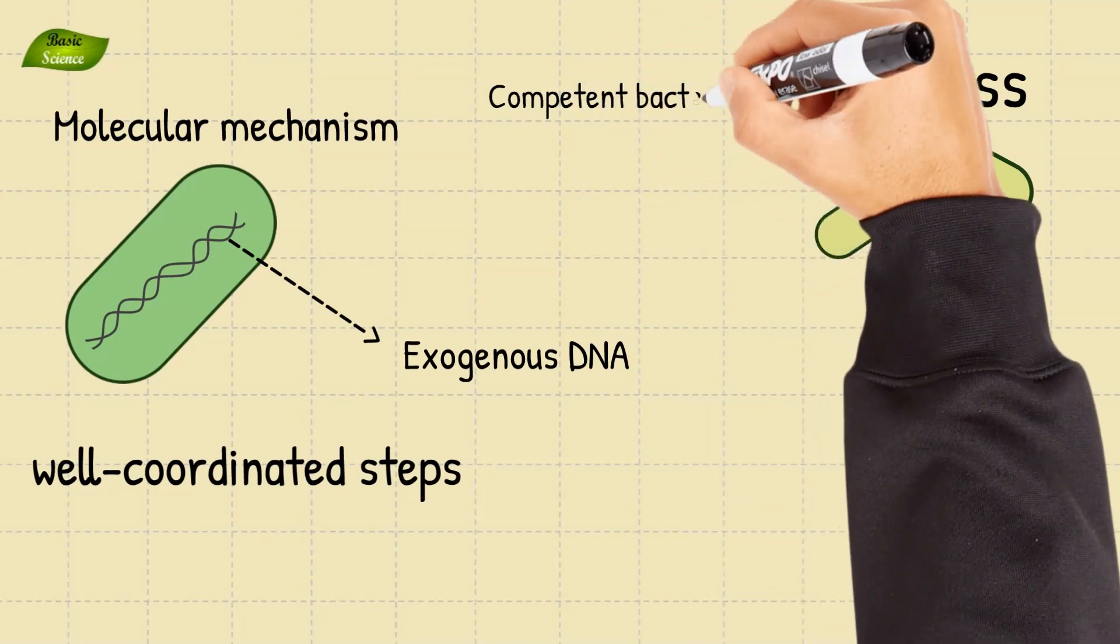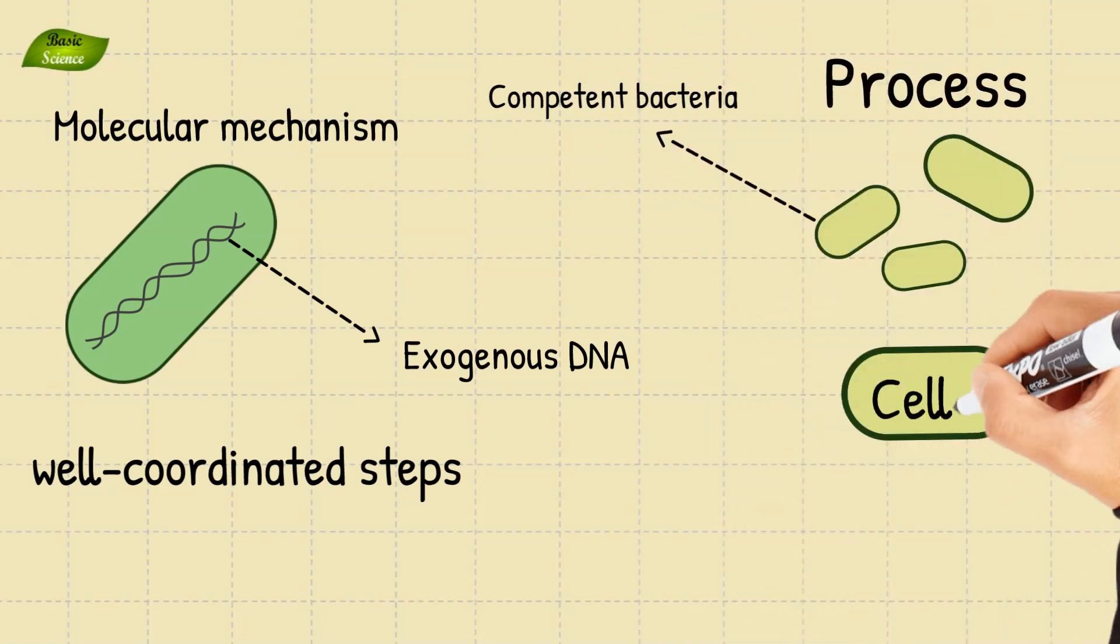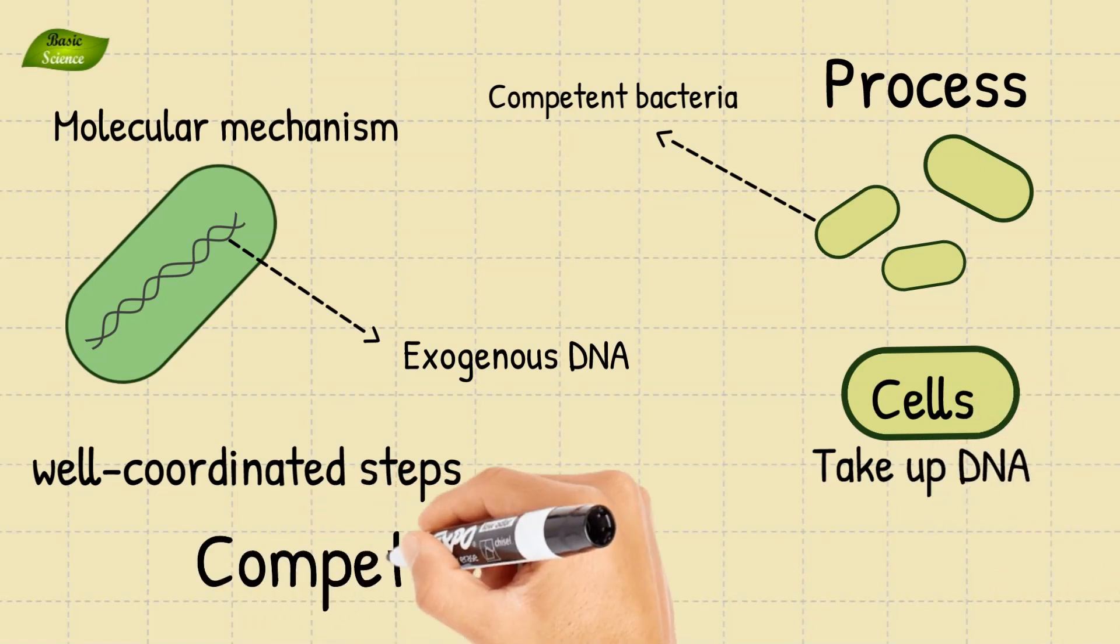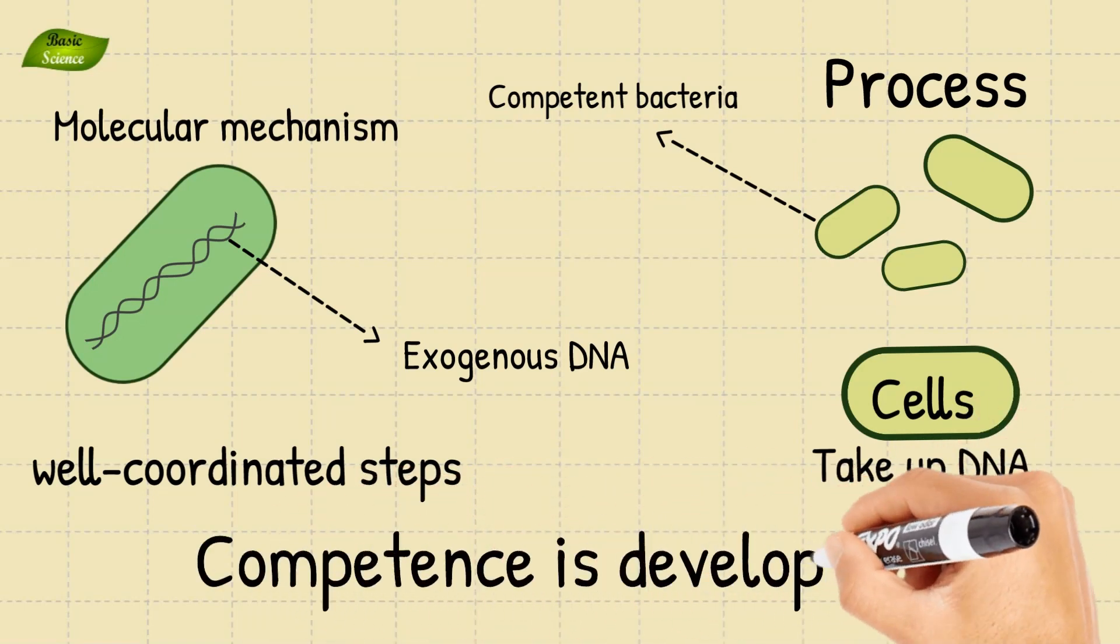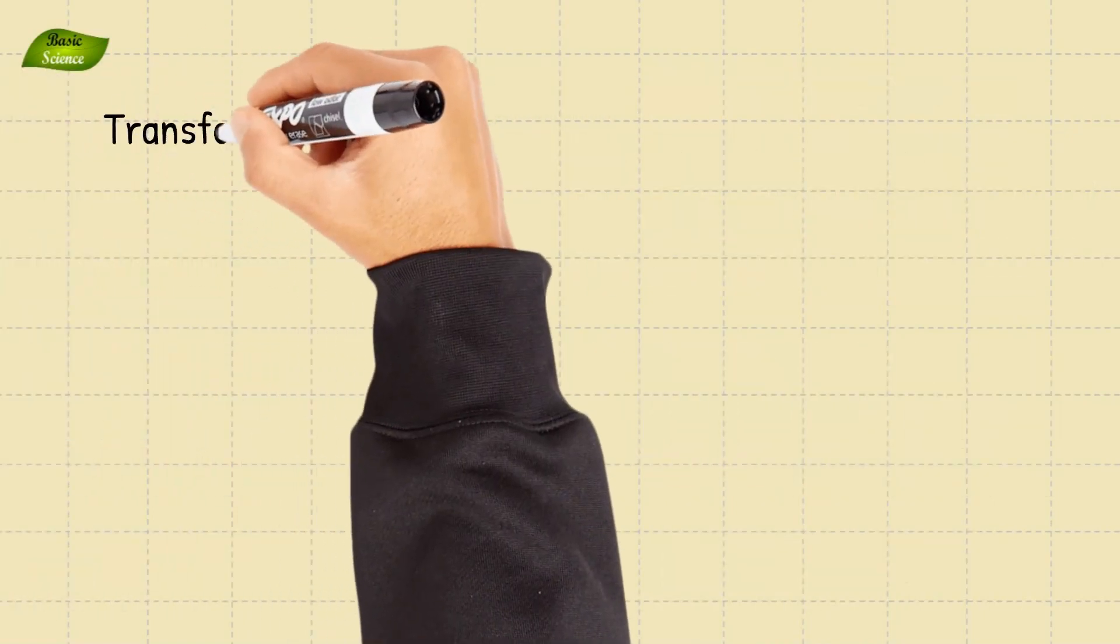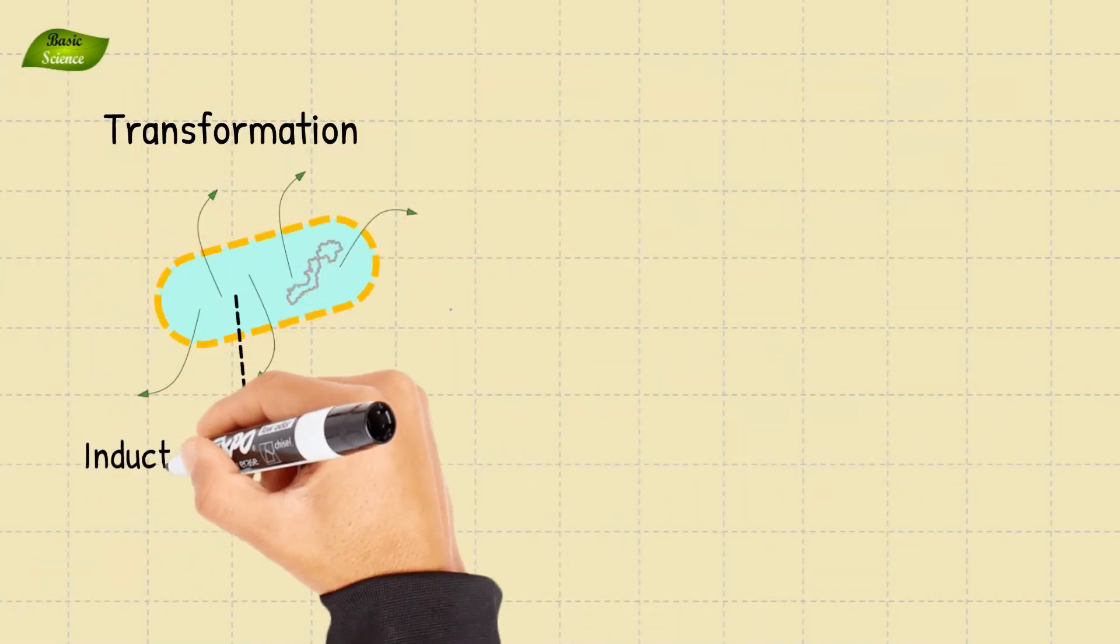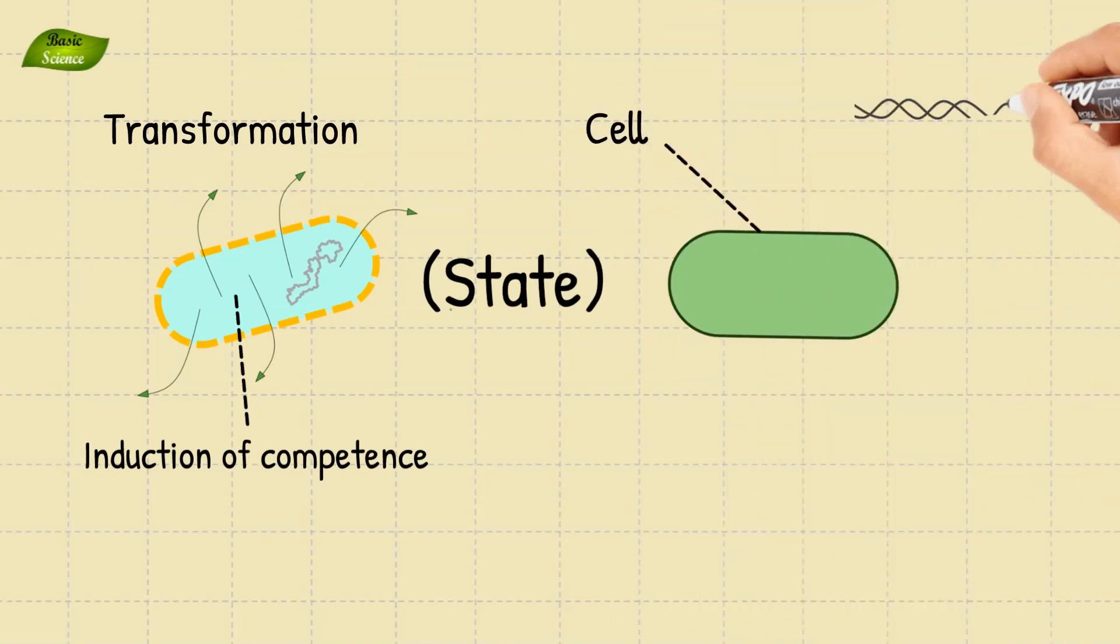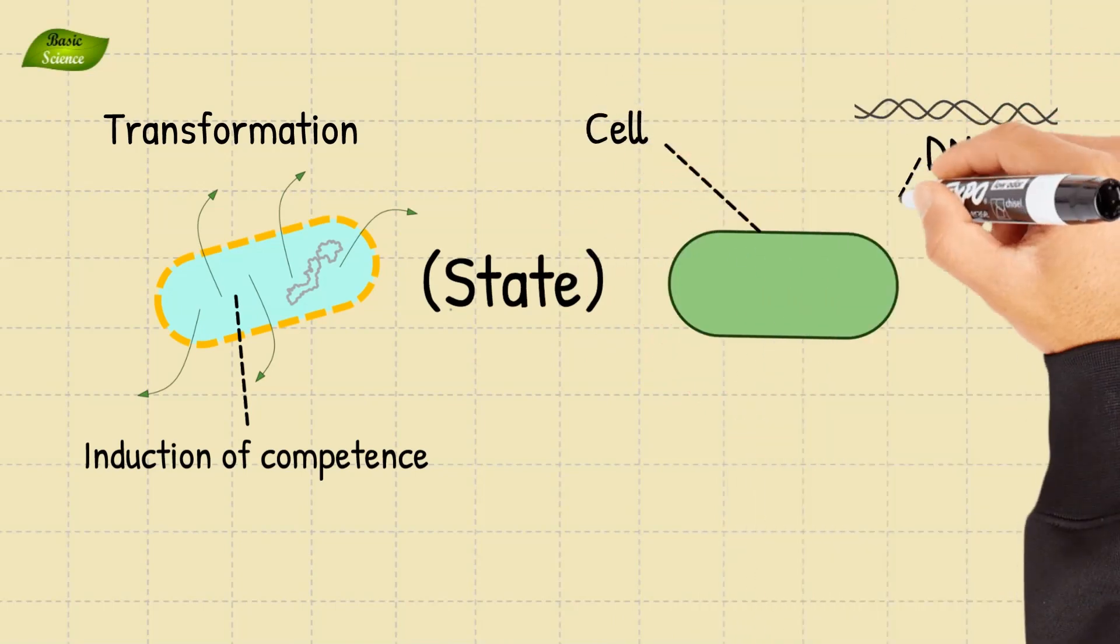These bacterial cells have developed the ability to take up and integrate DNA from outside. The transformation process begins with the induction of competence. Competence is a state in which the bacterial cell becomes capable of taking up extracellular DNA.